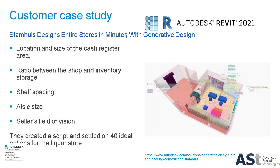Some customers starting to use these tools: Stamos Designs, a retail designer, used a script to do the layout of their liquor store. All you need are the Revit walls, a room area, the script loaded in, and your families in the template. This will run 40 different design options within minutes, looking at the locations of the cash register, the ratio between shop and inventory storage, aisle spacing — especially important with COVID-19 — and even views to the seller's field of vision. For supermarkets and planograms, this can be incredibly helpful and efficient.